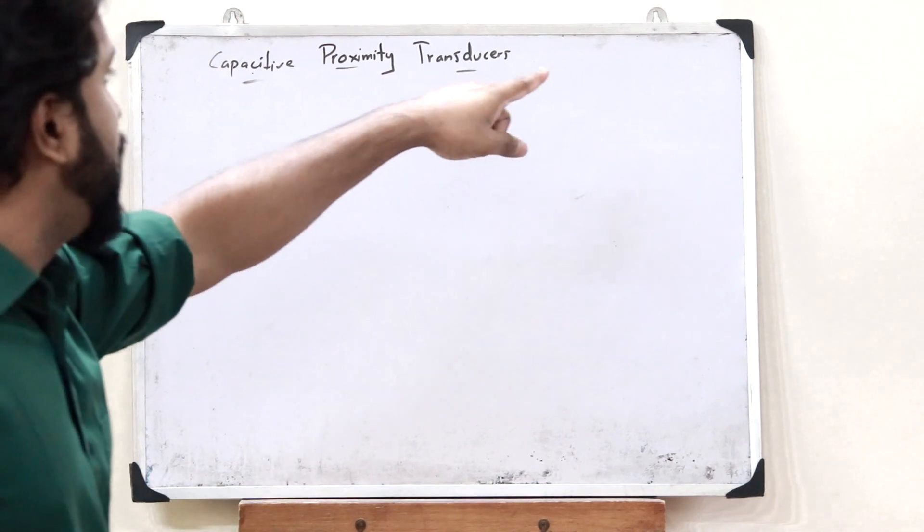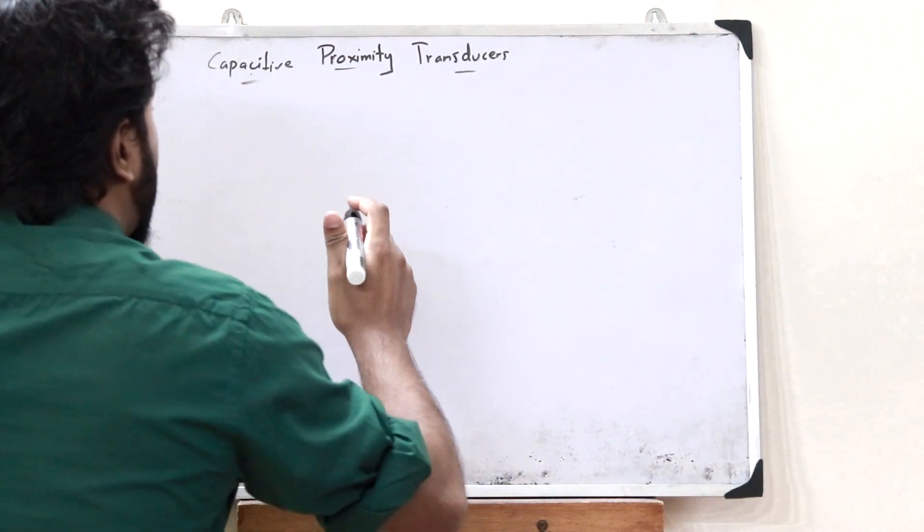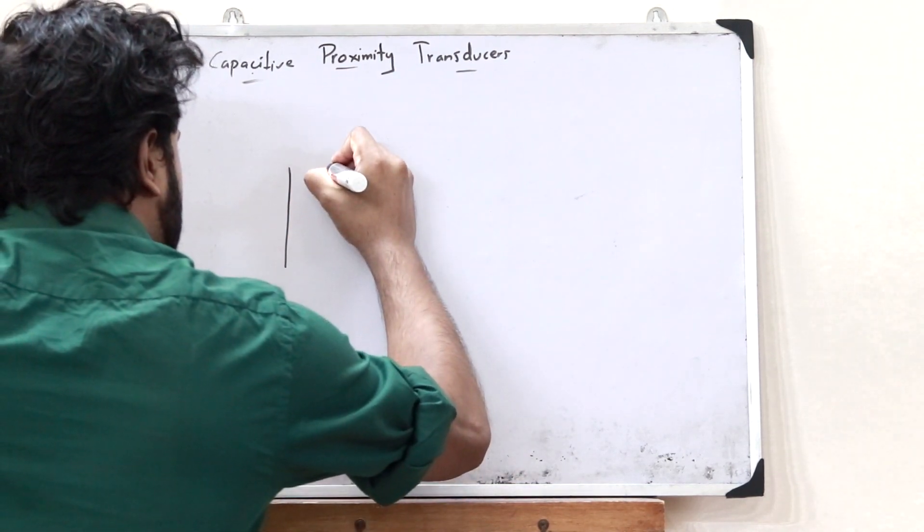That is what you refer to as a capacitive proximity transducer. In the case of a capacitive proximity transducer, what happens is that we use the principle of a parallel plate capacitor.